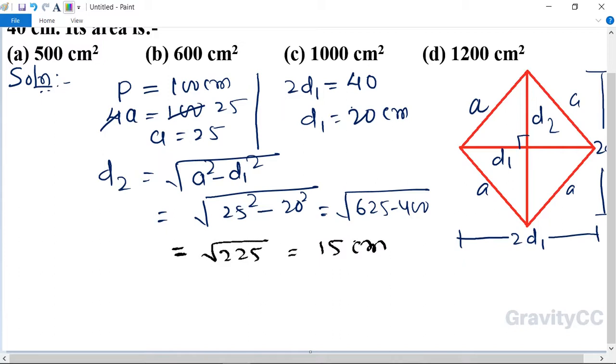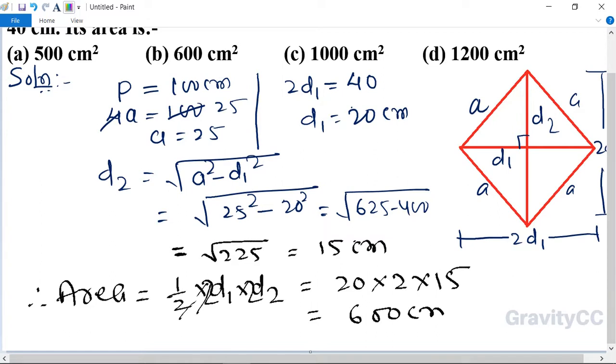Therefore area equals half into d1 into d2, which is 2d1 into 2d2. Here the 2s cancel. 20 into 2 into 15 equals 600 centimeters squared. So option b is the correct answer.